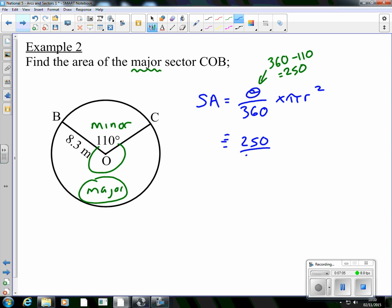multiplied by π, the radius here is 8.3. So we're doing 250 over 360, multiplied by π, times 8.3 squared. Our unrounded answer is 150.2946 and so on. And if we do three significant figures, it will be 150. Again, area, three significant figures, meters squared, so it's 150 meters squared. Now, that's two examples.